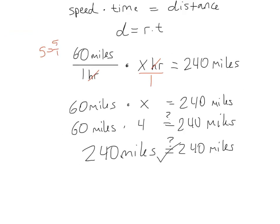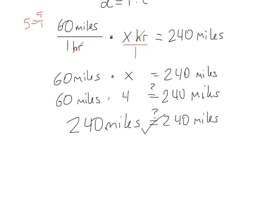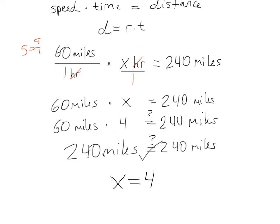So our solution is 240, right? No. Keep in mind, the solution is the number you plugged in for the variable that gave you this true statement. So X equals 4. The question is, for what? Well, if we look back at the original equation, we said 60 miles per hour times X amount of hours equals 240. So X was standing for the amount of hours. So 4 hours. And that's our solution.